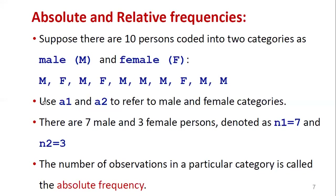By using a1 and a2 to refer to male and female categories — a1 is male, a2 is female. Counting: there are seven males and three females, so n1 equals 7 and n2 equals 3. The number of observations in a particular category is called the absolute frequency. Here category one (male) has absolute frequency 7, and category two (female) has absolute frequency 3.